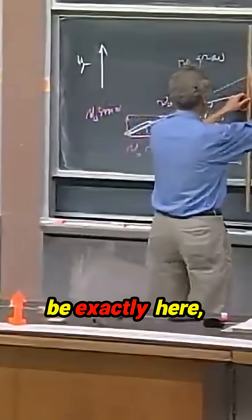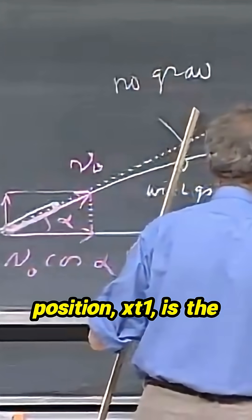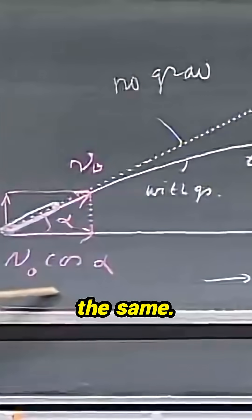It must be exactly here because the x-position, xt1, is the same because the horizontal velocity is the same.